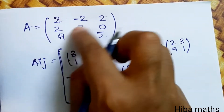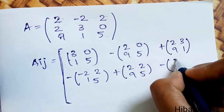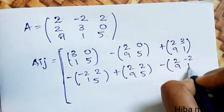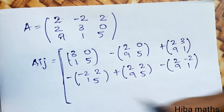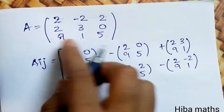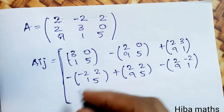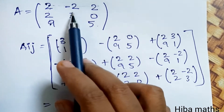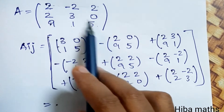Second row, third column cofactor: minor is [[2, -2], [9, 1]]. Third row, first column cofactor: minor is [[- 2, 2], [3, 0]].